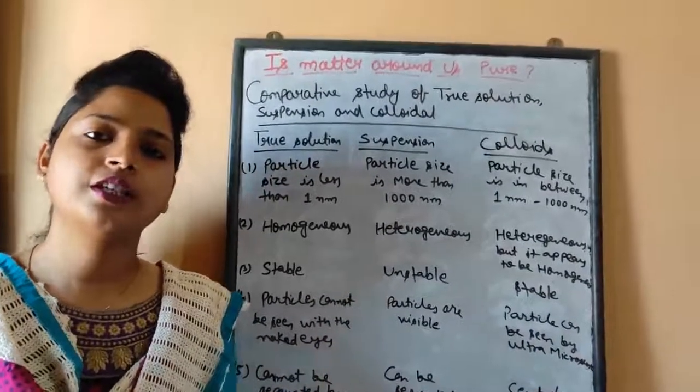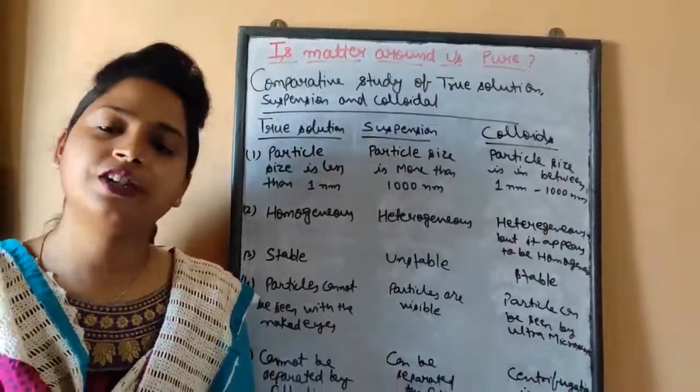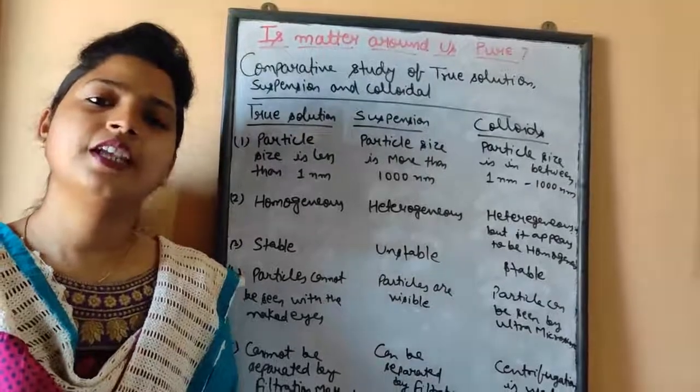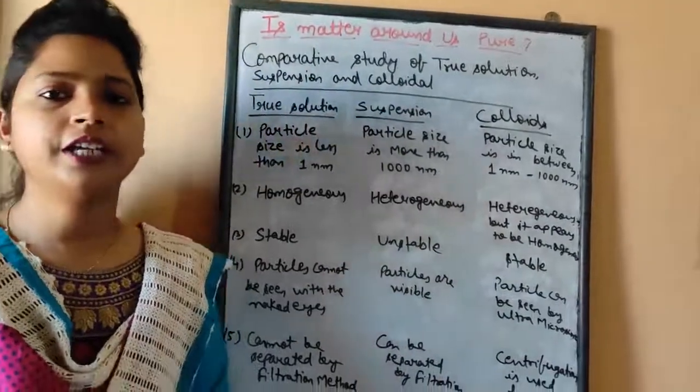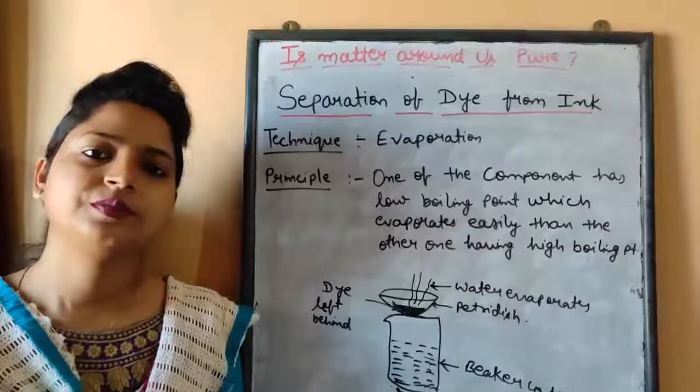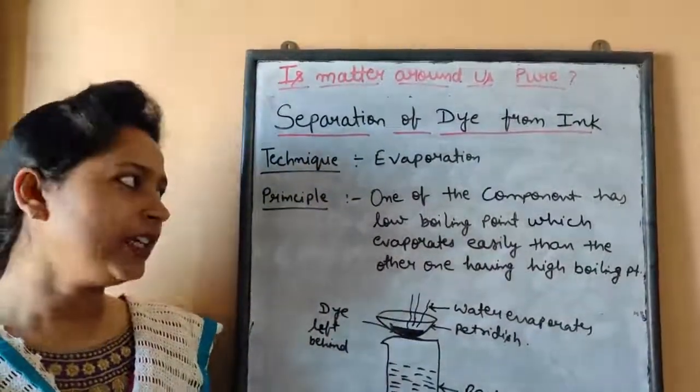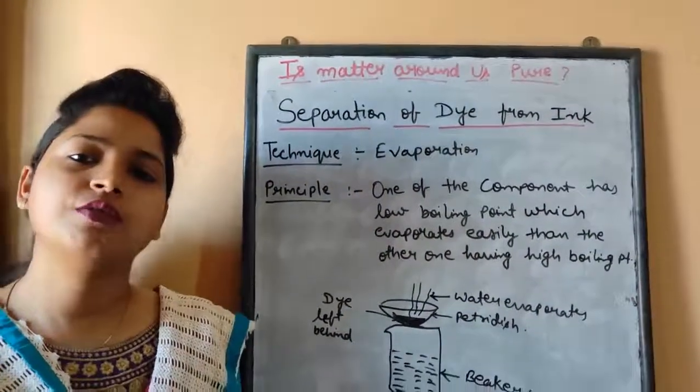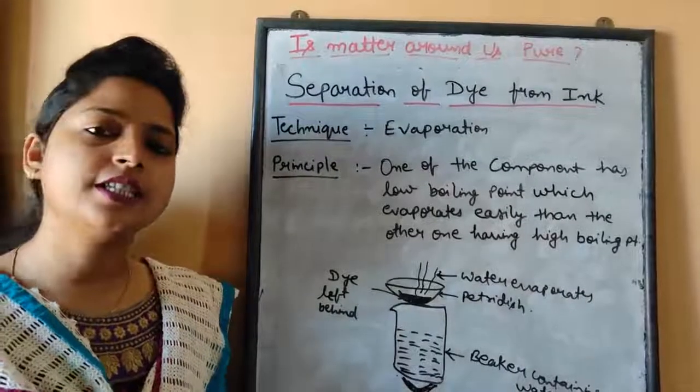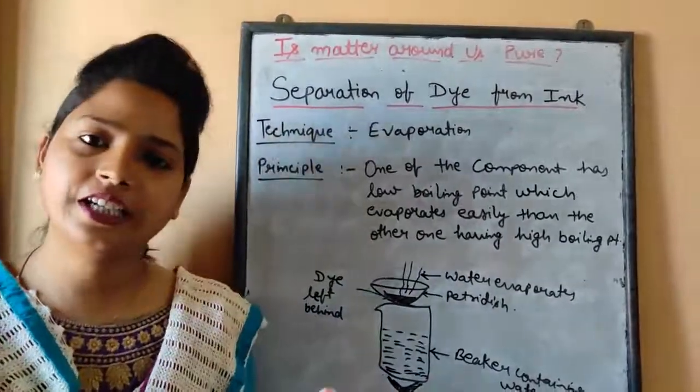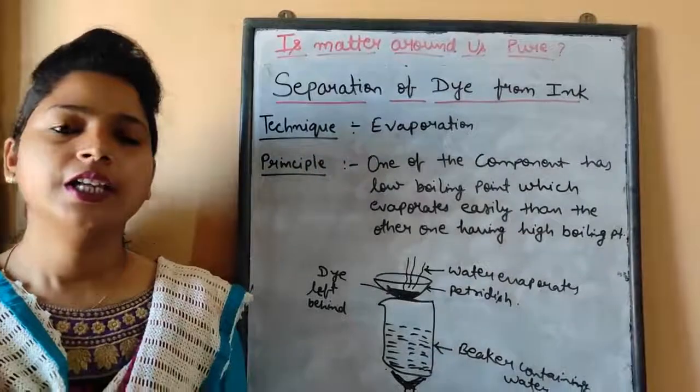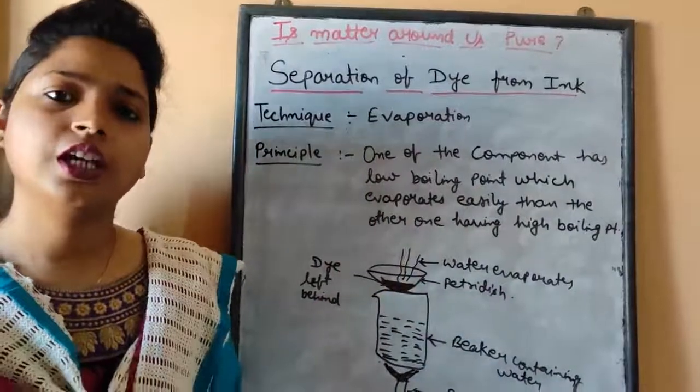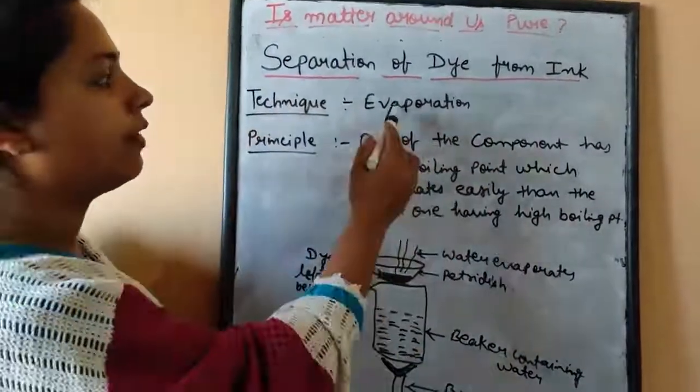So let's start the first separation technique given in your book: separation of dye from ink. The first thing that we have to separate is separation of dye from ink. Ink which we use for writing purpose or for other things is actually the mixture of the coloring agent, that is dye, with water. Now how can we separate the dye—blue dye or black dye—from that ink solution? For that we use the technique evaporation.